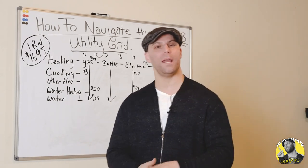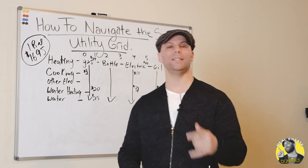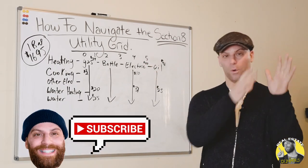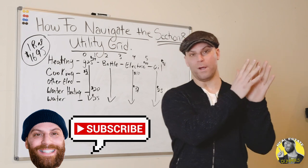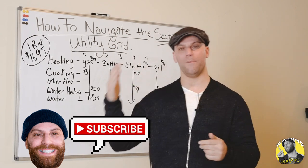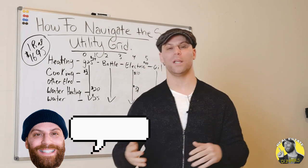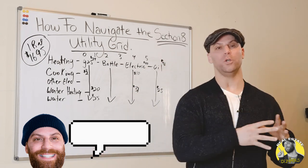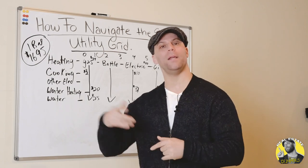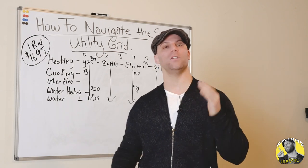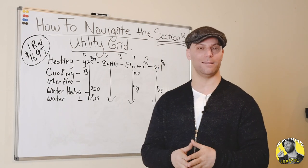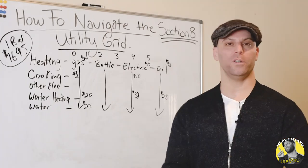We're going to go through that with you guys today so you understand exactly how the FMR, or the allowable rent for a studio through five-bedroom house, works compared to the utilities that you set up in that particular house and ultimately what you as the landlord nets.